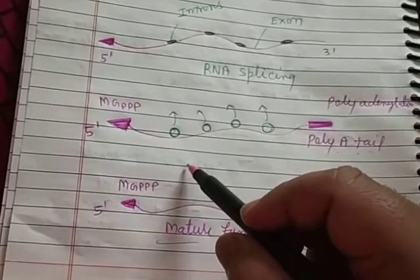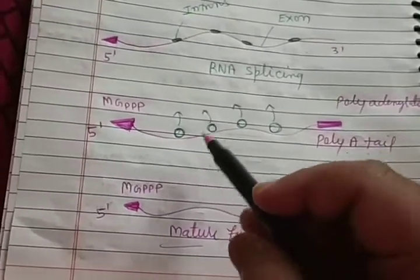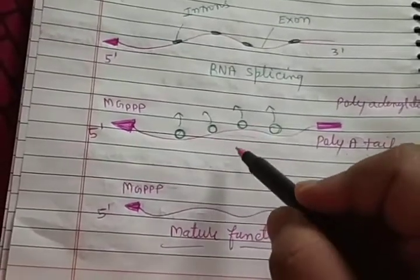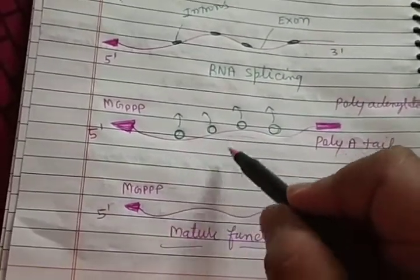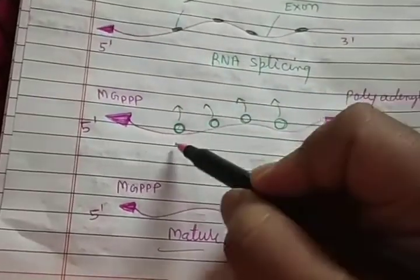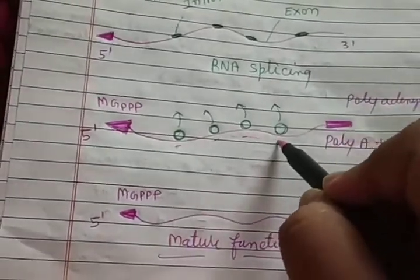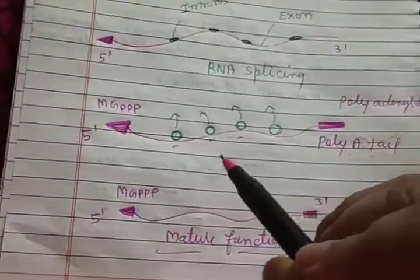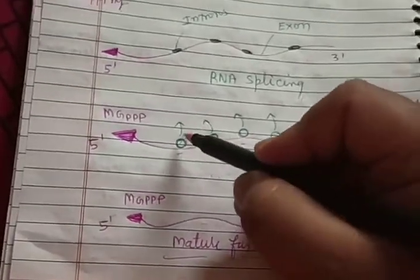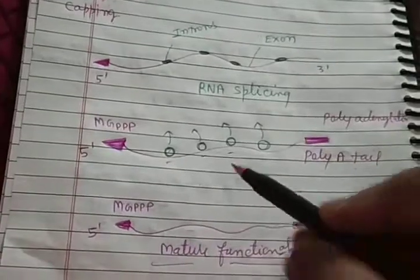The spliceosome is formed by the help of snRNP (small nuclear ribonucleoprotein) plus other protein molecules, which combine to form the spliceosome protein complex. After introns are removed, a gap is formed, which is filled by the help of RNA ligase enzymes. The removed introns return back into the nucleus.